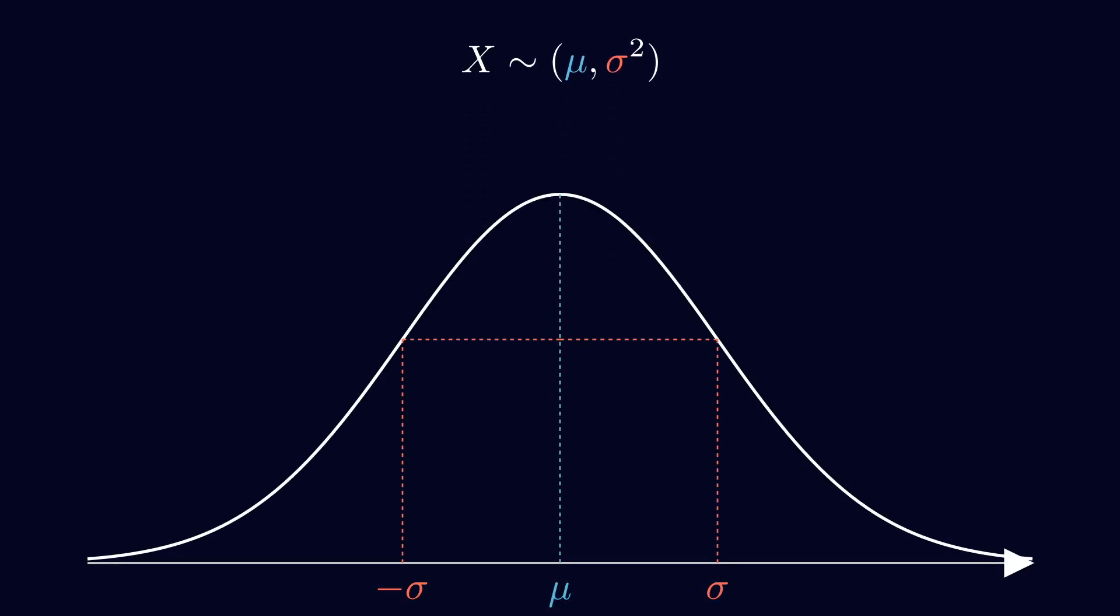Okay, so now, let's look at the Gaussian random variable. By the way, Gaussian and normal mean the same thing, so you will hear me say both. A Gaussian random variable has two parameters, mu, which is the mean, and sigma square, which is the variance. This type of distribution has a distinctive bell shape, which you can see here.